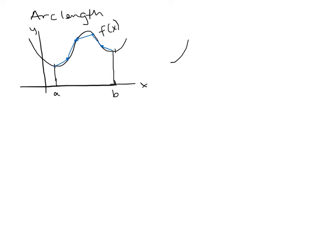If we zoom into one of those small segments, we can see that little bit of curve with a straight-line segment in it. We can then separate that line segment into some delta x sub i value and some delta y sub i value — these are different for every one of the segments. Using the Pythagorean theorem, the length of that segment is the square root of delta x sub i squared plus delta y sub i squared.